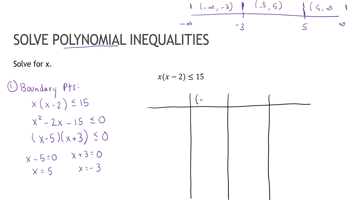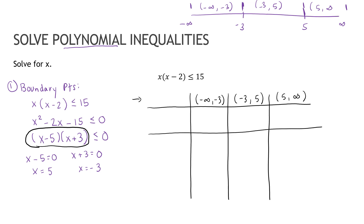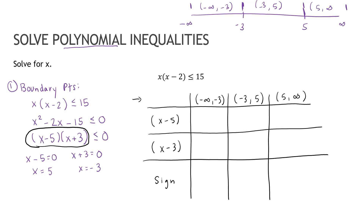I'll put my intervals — negative infinity to negative 3, negative 3 to 5, and 5 to infinity — across the top. On the left side, I need one row for each factor plus one additional row for the sign. So I need a row for x minus 5, a row for x plus 3, and then one last row at the bottom for the overall sign. That's how I set up my table.